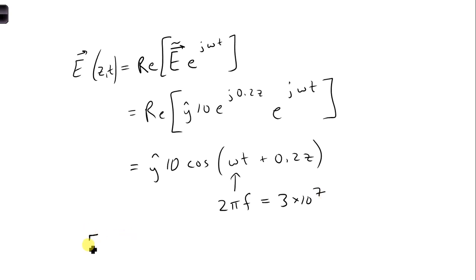Our final expression is E of z and t equals y hat 10 cosine of 3 times 10 to the 7th t plus 0.2 z volts per meter.